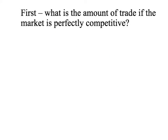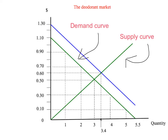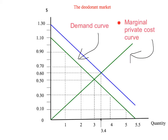Let's start answering our questions. First, what is the amount of trade if the market is perfectly competitive? Let's look at the deodorant market — we need demand and supply. We've already worked out the demand curve. If Sam is a price taker, then the demand curve is the dotted green line. We can also put on our supply curve, which is the upward sloping line. The supply curve is also the marginal private cost curve — the marginal cost to the private suppliers of the good, which in this case is deodorant.